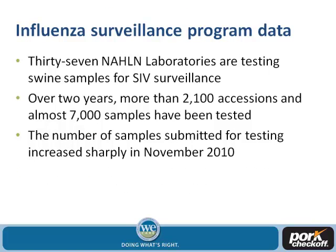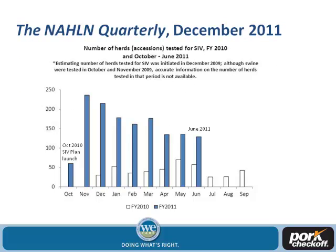To date, we have 37 National Animal Health Laboratory Networks that are testing or able to test samples for swine influenza virus surveillance. Over two years, we've had more than 2,000 accessions and almost 7,000 samples have been tested. The number of samples submitted for testing increased sharply in November 2010. The non-quarterly — our reporting publication that comes out quarterly, last published in December 2011 — shows accessions between 2010 and June 2011.